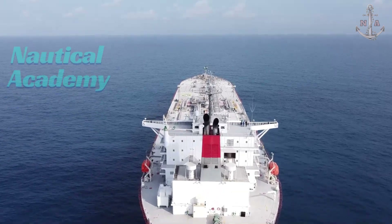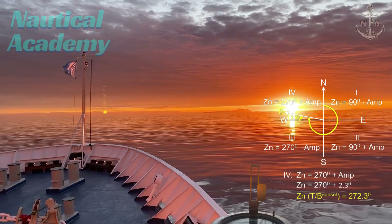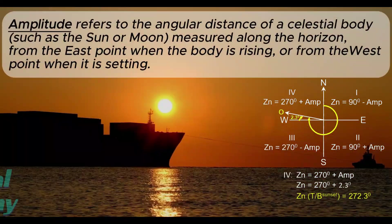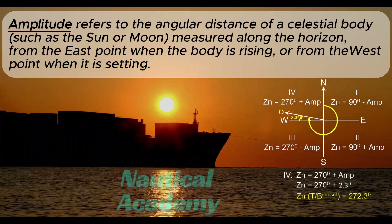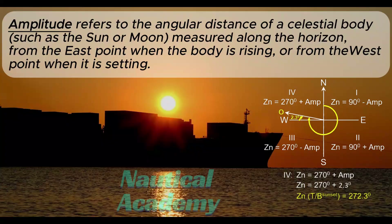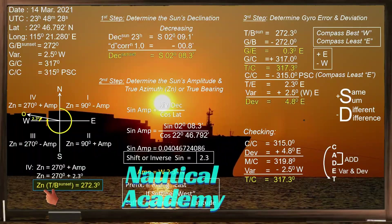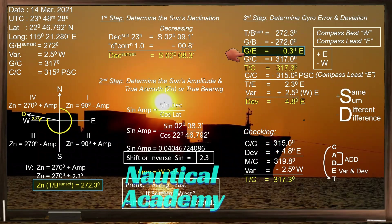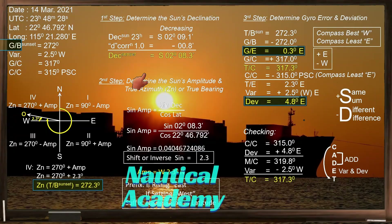In today's video, I'll show you how to determine the gyro error and the deviation in the ship's heading using the amplitude of the sun. Amplitude refers to the angular distance of a celestial body, such as the sun or moon, measured along the horizon from the east point when the body is rising, or from the west point when it is setting. It is primarily used to determine the error of the ship's compass by comparing the compass bearing of the chosen celestial body with its true bearing at the time of observation.